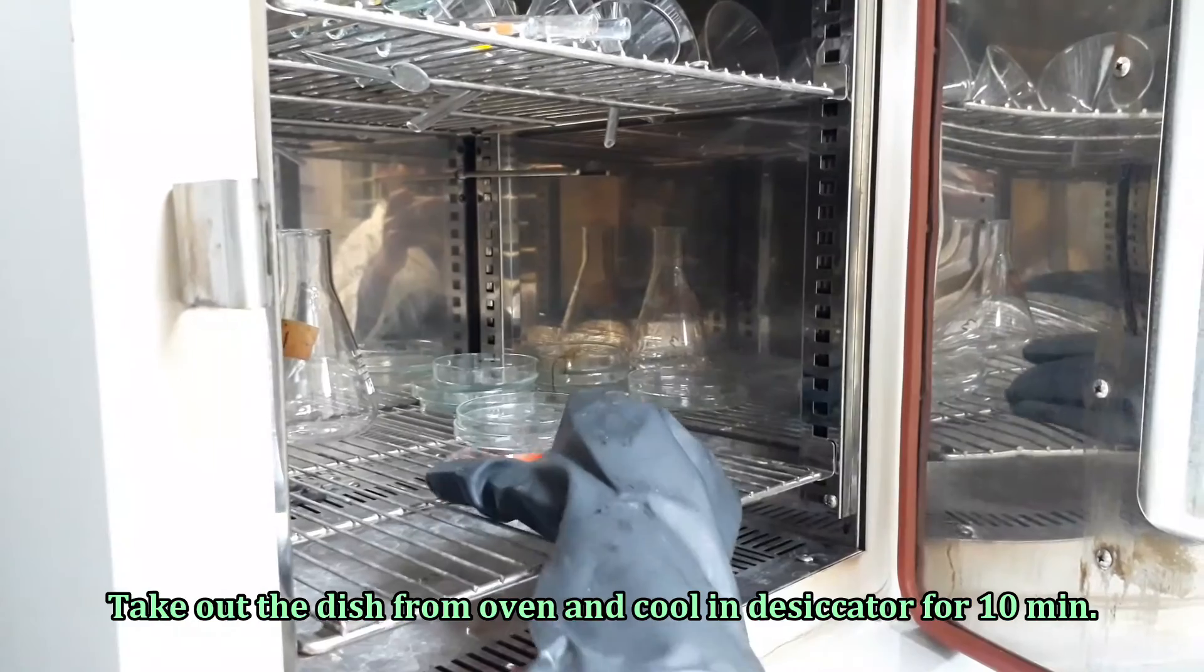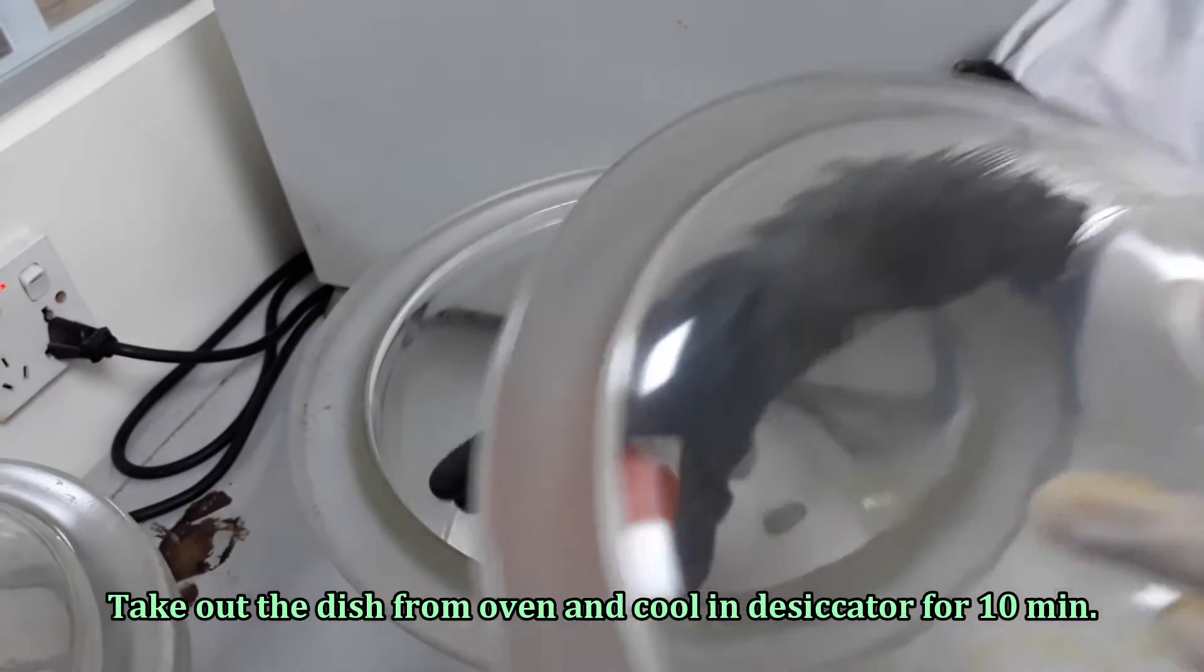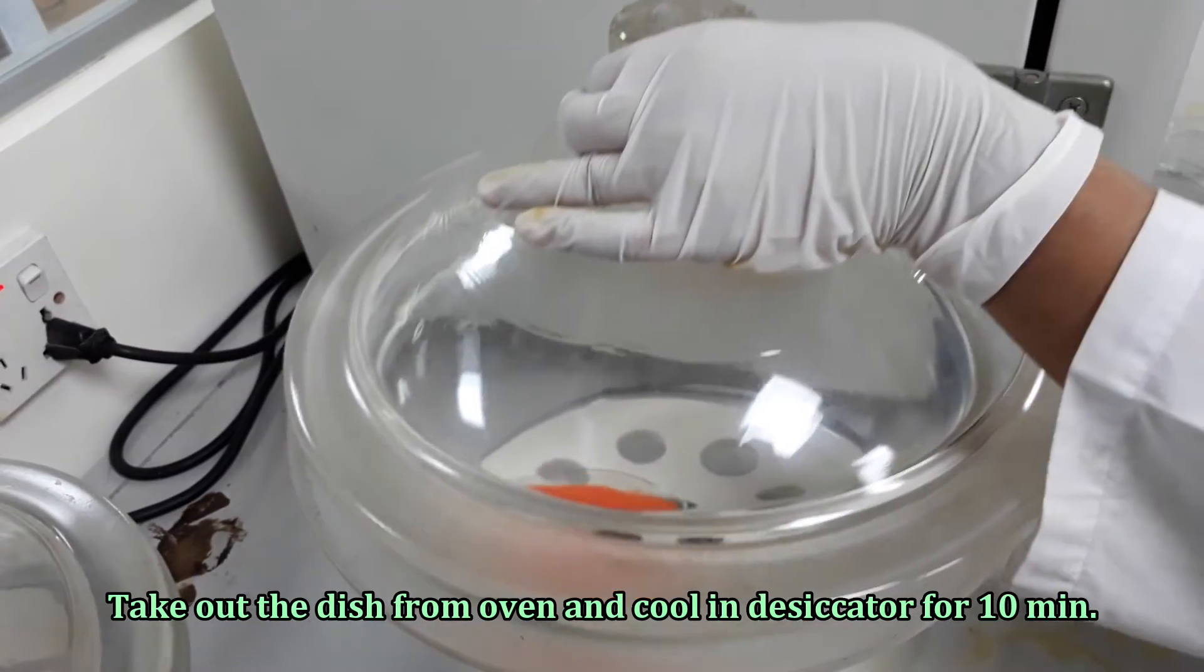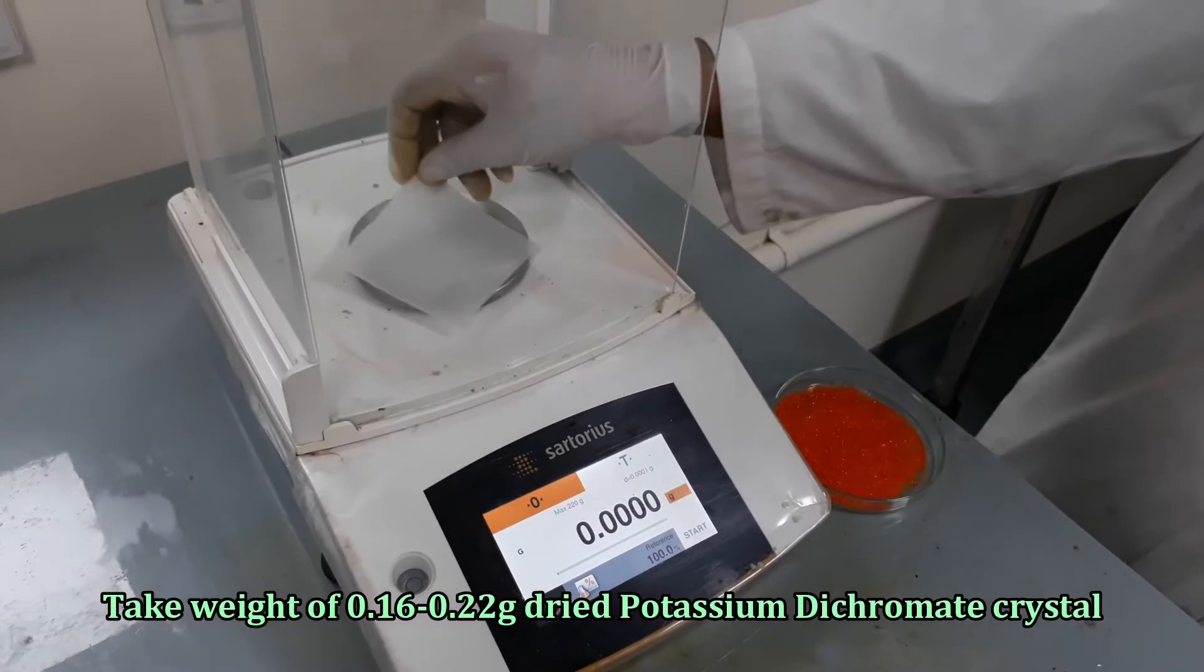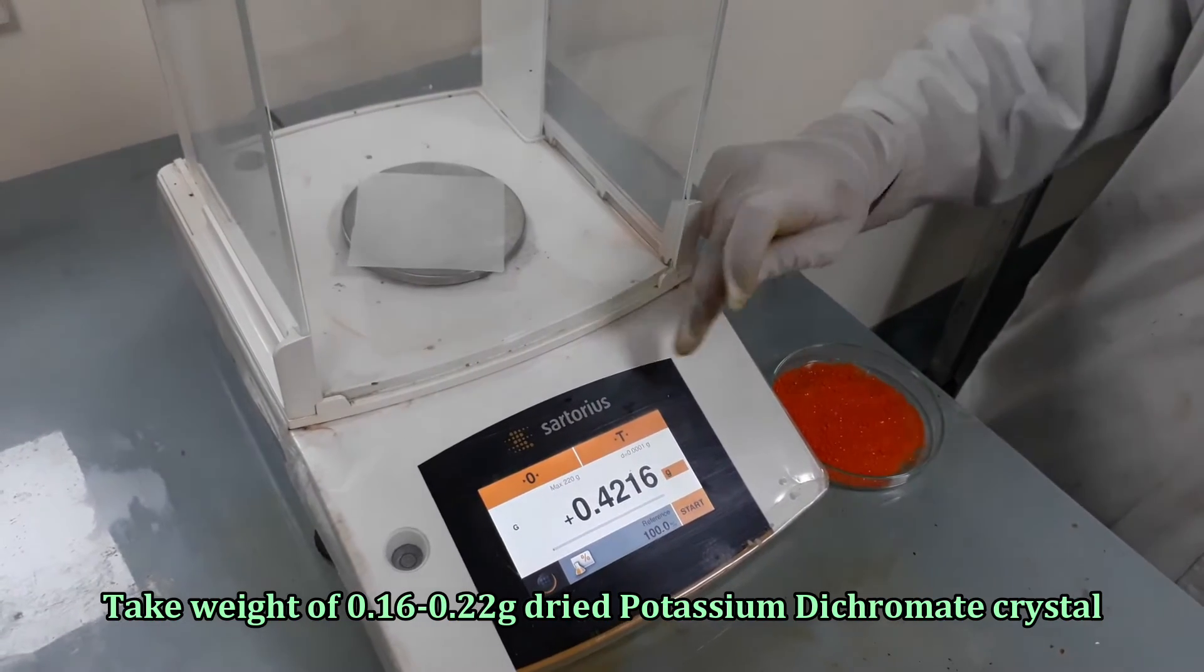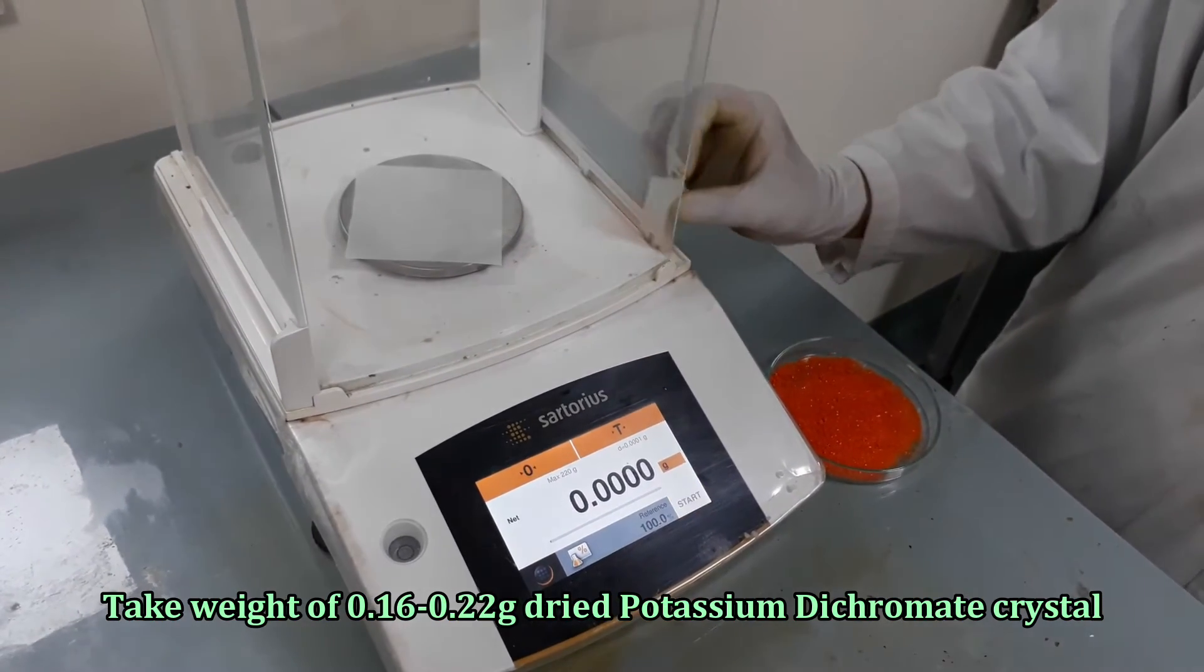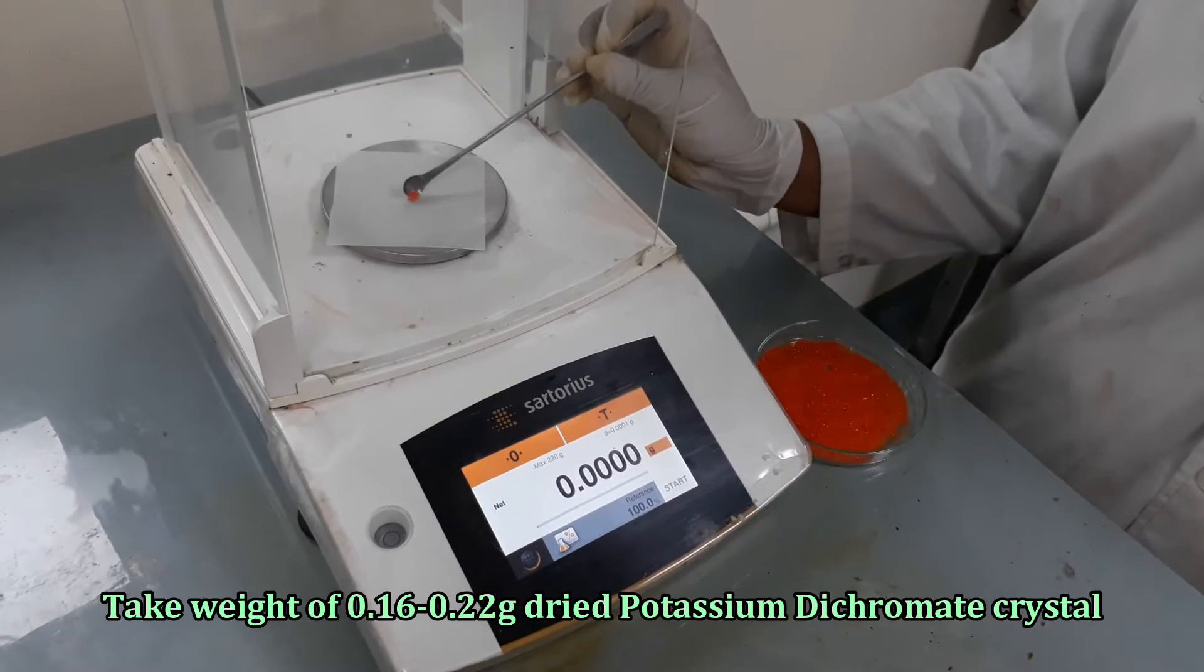After drying, cool the potassium dichromate in a desiccator. Take 0.16 to 0.22 gram of dried potassium dichromate crystal into a conical flask.